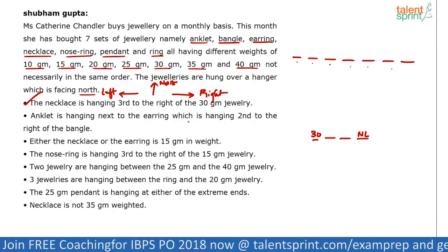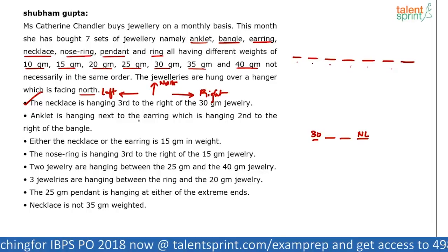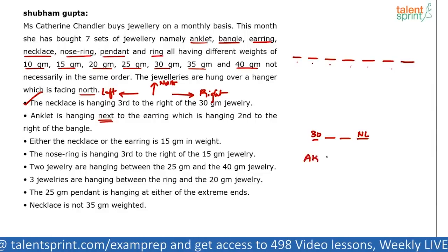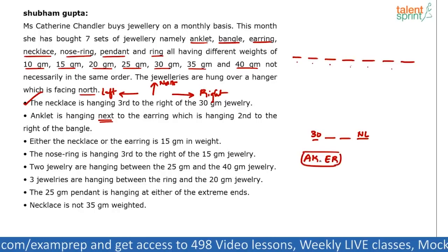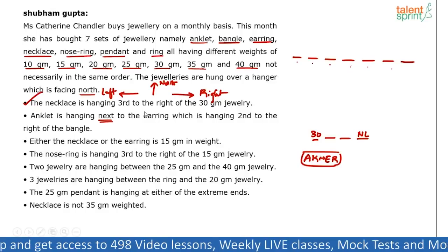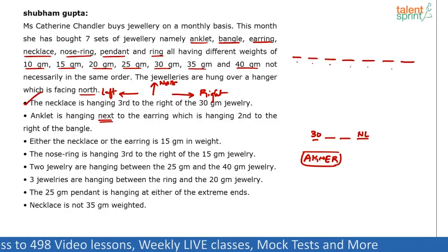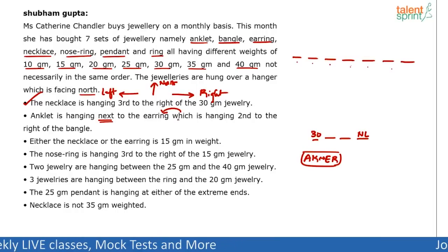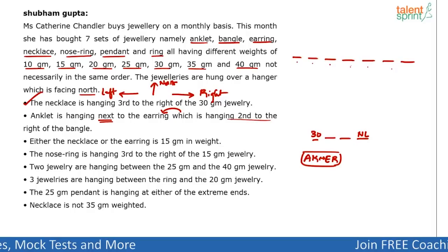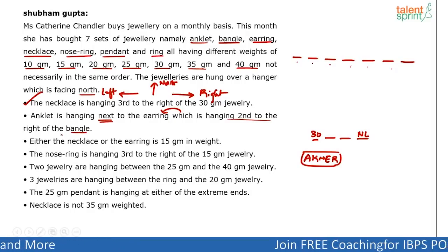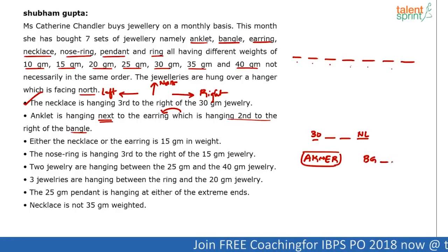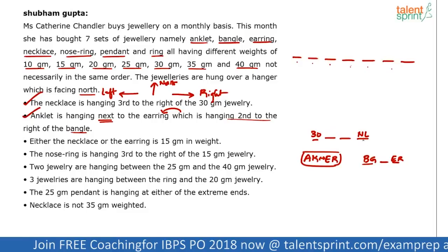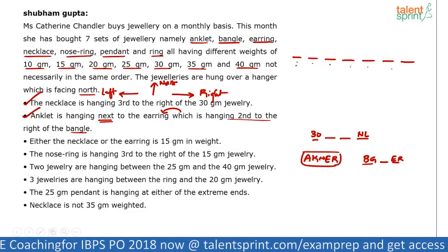Next point: anklet is hanging next to the earring, which is hanging second to the right of the bangle. Anklet next to earring means they are immediate neighbours — anklet (AK) and earring (ER) are immediate neighbours, but these can be swapped. Earring is hanging second to the right of the bangle: if this is bangle (BG), earring is second to the right — first and second, this is earring. These representations have to be connected and put on the arrangement.